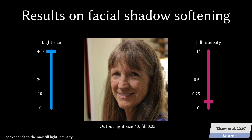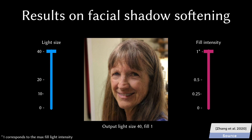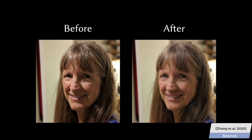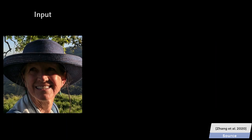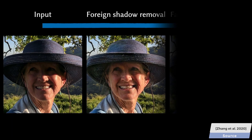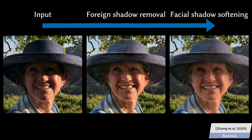Absolutely amazing. As a result, we now have a two-step algorithm that first removes foreign shadows and is able to soften the remainder of the facial shadows, creating much more usable portrait photos of our friends — and all this after the photo has been made.